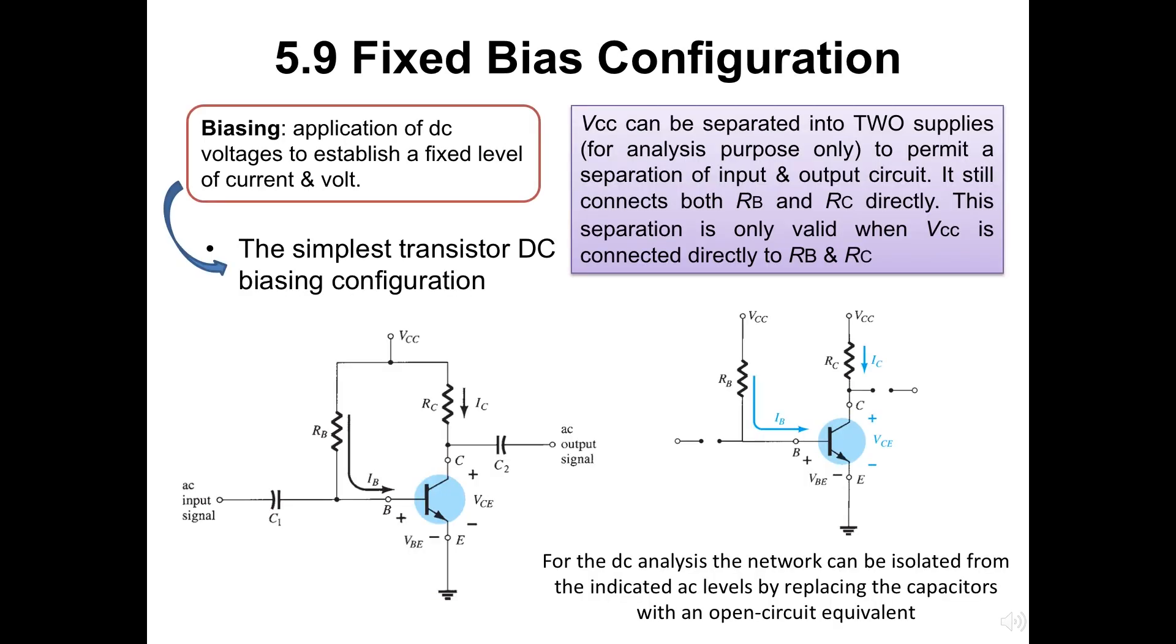To discuss about fixed bias configuration, it is better to know the biasing meaning. Biasing is an application of DC voltages to establish a fixed level of current and volt. As the simplest transistor DC biasing configuration as in the figure at bottom left, the VCC can be separated into two supplies for analysis purpose only, to permit a separation of input and output circuit. For the DC analysis, the network can be isolated from the indicated AC levels by replacing the capacitors with an open circuit equivalent.